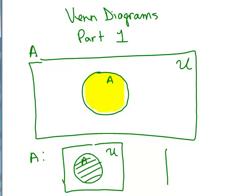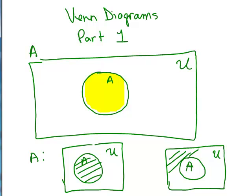How about if I wanted to do A complement? That means I want everything except A. So that means I have to shade everything outside of A that's in the universe. So, this is a picture of what A complement looks like. So this is A complement. So we have A and we have A complement.